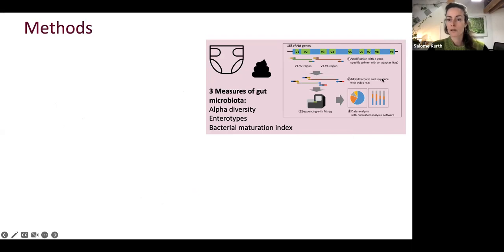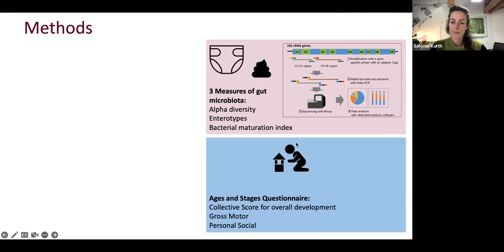For the microbiome, we worked with collaborators in Denmark and at ETH in Zurich to help us with this rather complex sequencing and biostatistics. We used the 16S rRNA sequencing that targets a gene in bacteria that is phylogenetically conserved, so it will help to identify which bacteria are present in the stool sample. With that, we used three measures: one is a measure of diversity, the most commonly used measure of alpha diversity. Then we also used enterotypes. And the maturation index for behavior.